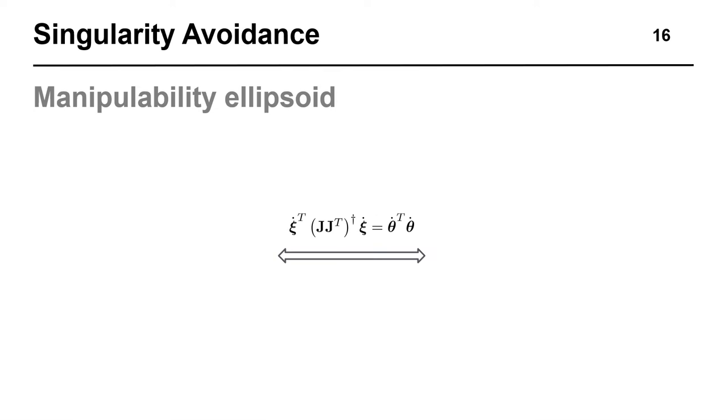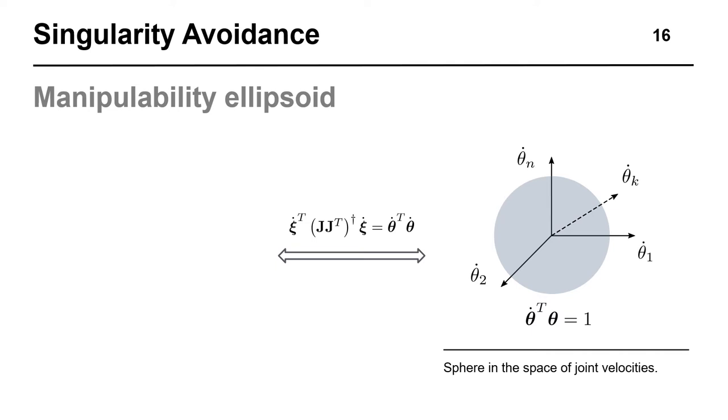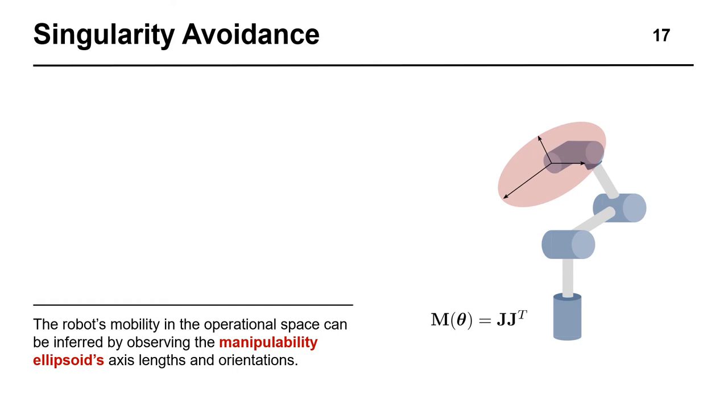First, we can equate the right side of the identity to a unit sphere in the space of joint velocities. Interpreting the left side of the equation, we can see that this sphere maps into an ellipsoid in the operational space. This ellipsoid is known as the manipulability ellipsoid, and its shape and size are strictly a function of the robot's Jacobian at a given configuration. The capacity of joint movements to produce motion in an operational space direction is proportional to the lengths of the manipulability ellipsoid axes.